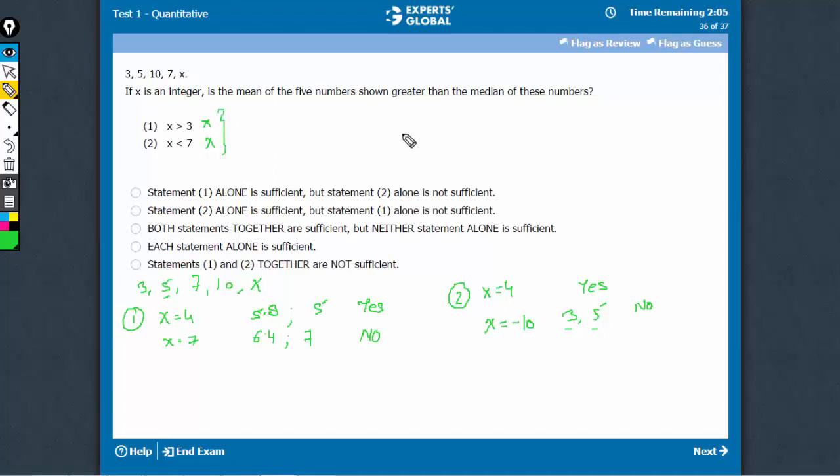And now when we combine, we know that x has to be between 3 and 7, it has to be integer. So the smallest value it can take is 4, where the answer is yes, and the greatest value it can take is x is equal to 6. In this case, the mean becomes 31 upon 5, 6.2, and the median becomes 6. Even in the highest value, mean is greater than the median.